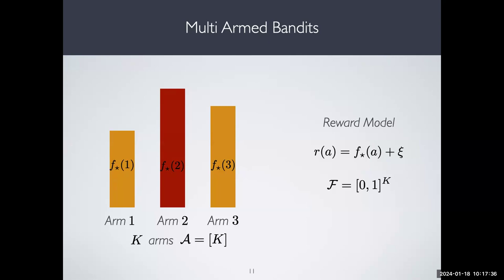If the mean reward is a point in [0,1]^K, that means the mean rewards — so the F-star of each arm — is just a point in [0,1]. You can identify the multi-arm bandit scenario as a setting where F-star is identified as a point in [0,1]^K. So this more abstract scenario subsumes multi-arm bandits by just setting F to this quantity.